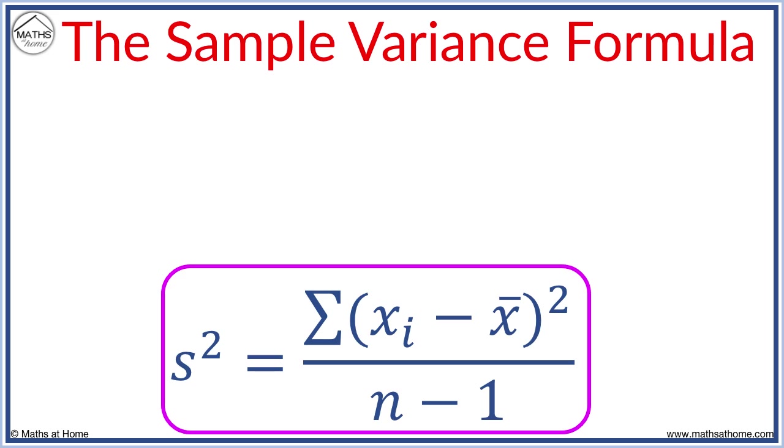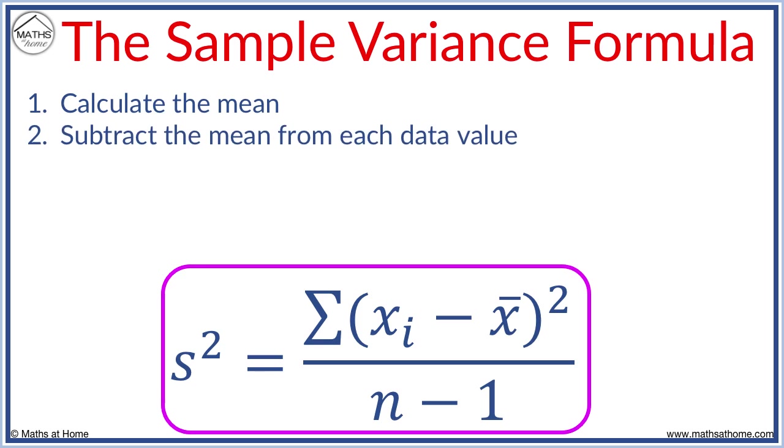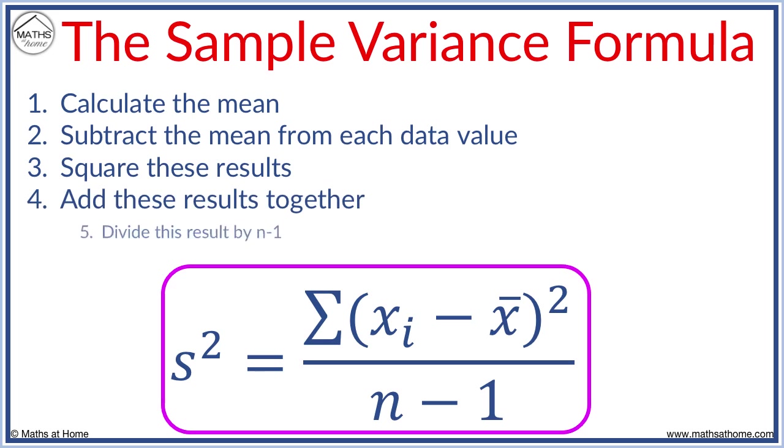We will break this formula down into steps. Step 1: Calculate the mean. Step 2: Subtract the mean from each data value. Step 3: Square these results. Step 4: Add these results together. Step 5: Divide these results by n minus 1.